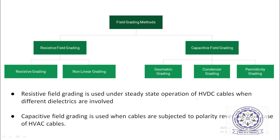Now, how to grade the field. The objective when you terminate the cable is to ensure the electric field does not increase and does not cause either degradation or breakdown. So you have to grade the field. There are several field grading methods.